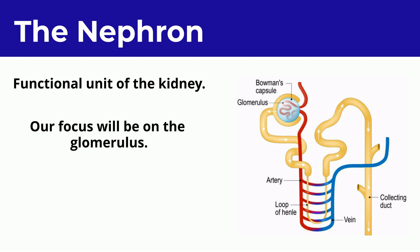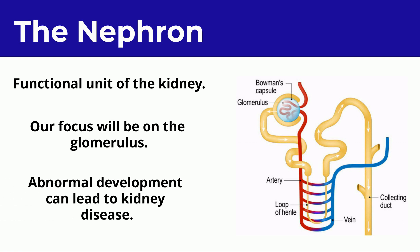The glomerulus is a network of small blood vessels where the filtration of the blood actually occurs. Abnormal development of the nephron can lead to kidney disease, as we will learn later on.